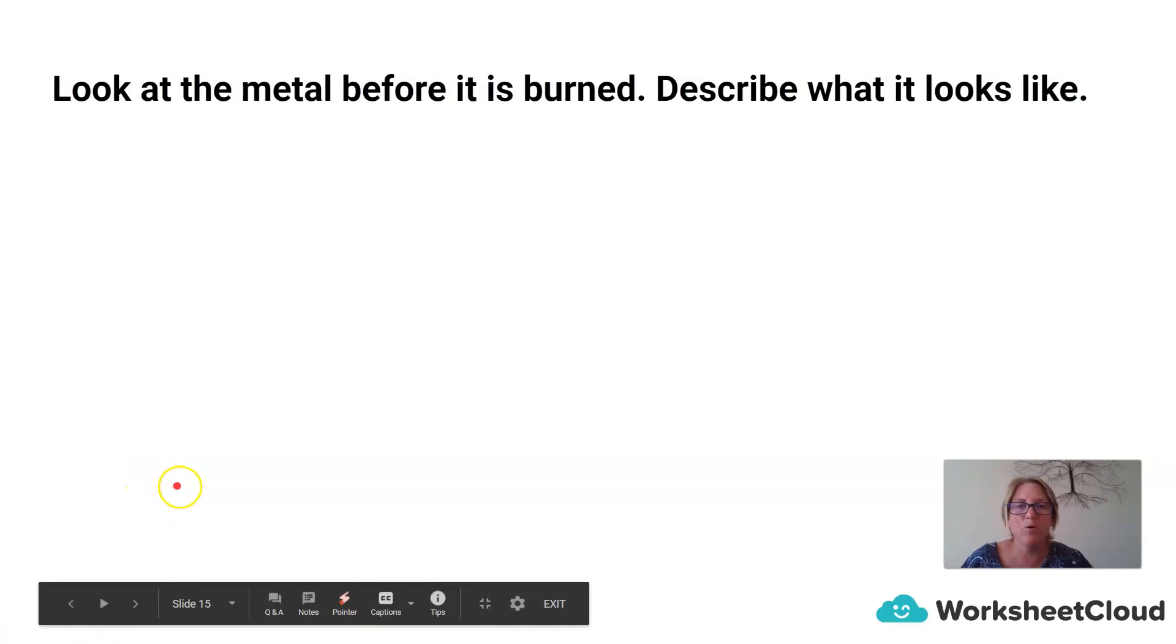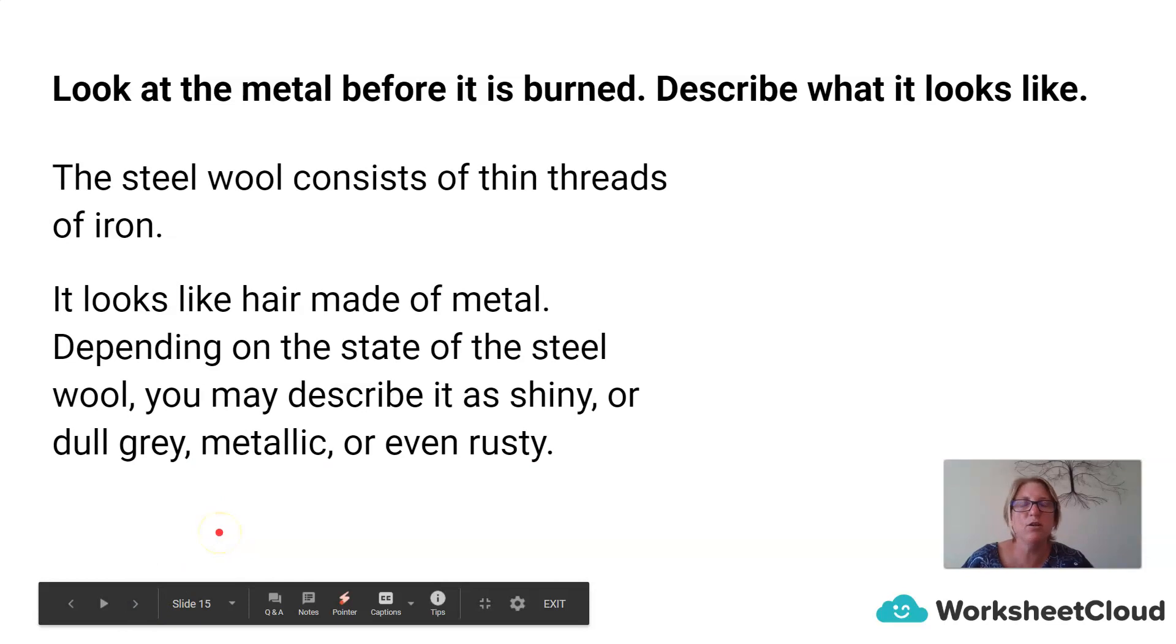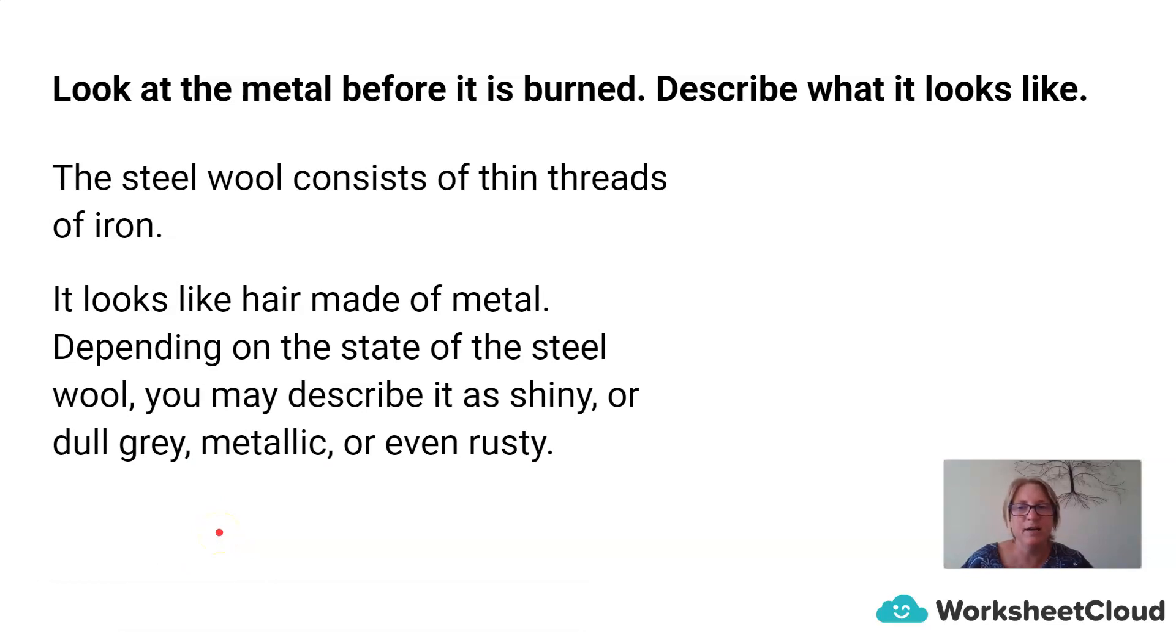Look at the metal before it was burnt. Describe what it looks like. So the steel wool consisted of thin threads of iron. You had to open it up and pull it apart so it wasn't so compact. And basically, it looked like thin hairs of metal. So depending on the state of the steel wool, it may be shiny or it may be a dull metallic gray. It may even be rusty. So it does depend on how long your steel wool has been exposed to air. So if it has been exposed to air and oxygen for quite a long time, the steel might not have a nice, bright, lusty, shiny color. It might have actually started to react with the air and formed a brown, rusty, orangey color. Or it may just be a dull metallic color.